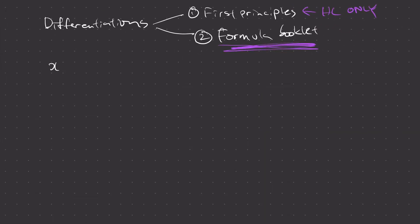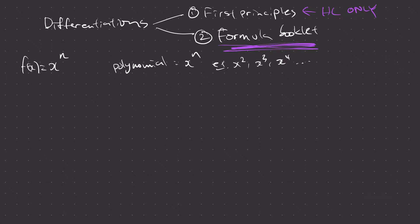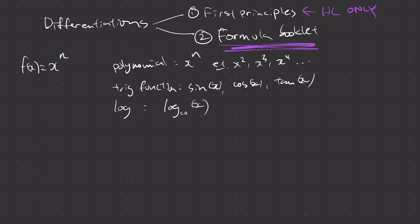Specifically, we'll focus on the function type x to the power of n. So what does that mean? From the functions unit, you learned about many different function types. We have a polynomial function — x to the power of n — so examples could be x squared, x cubed, x to the 4th, and so on. We also have trig functions like sine x, cosine x, tangent x, and log functions like log base 10 of x. There are many more, but in this video we're focusing on the polynomial type and how to differentiate it.